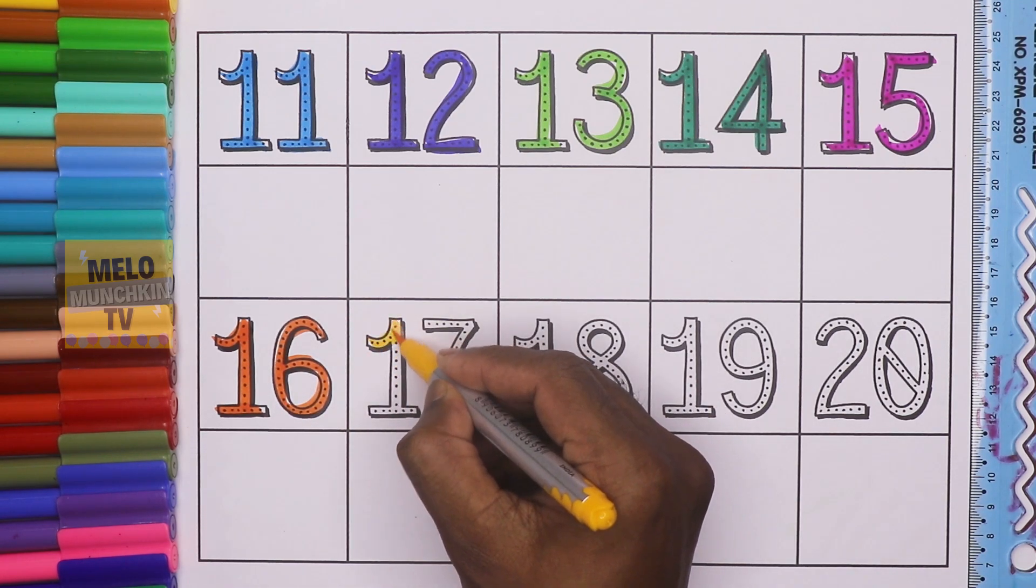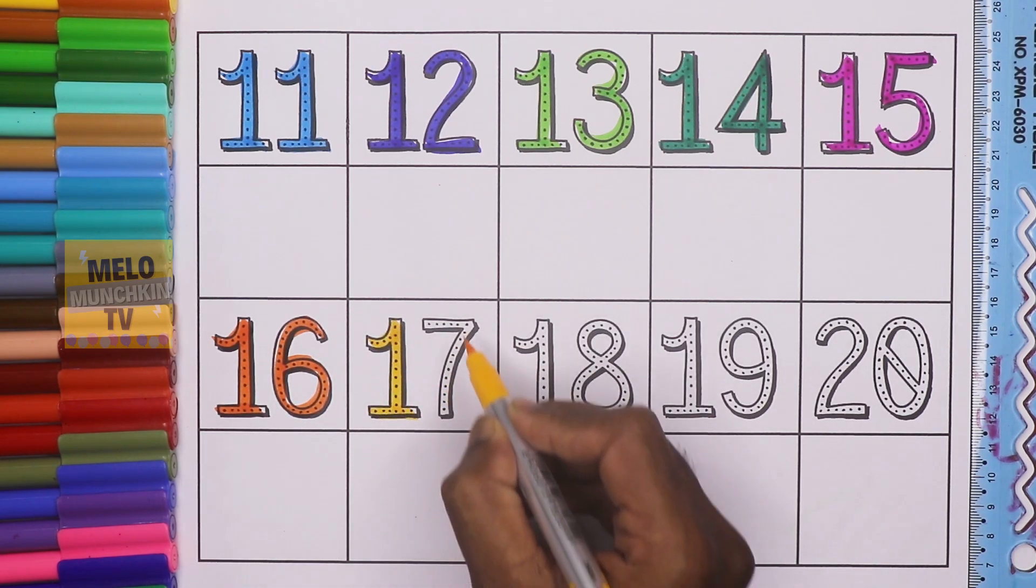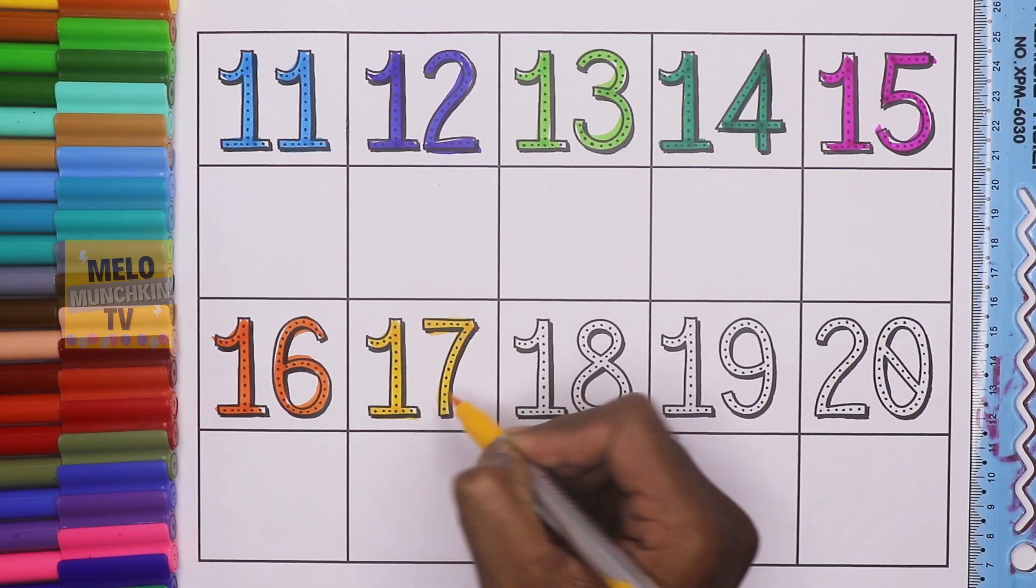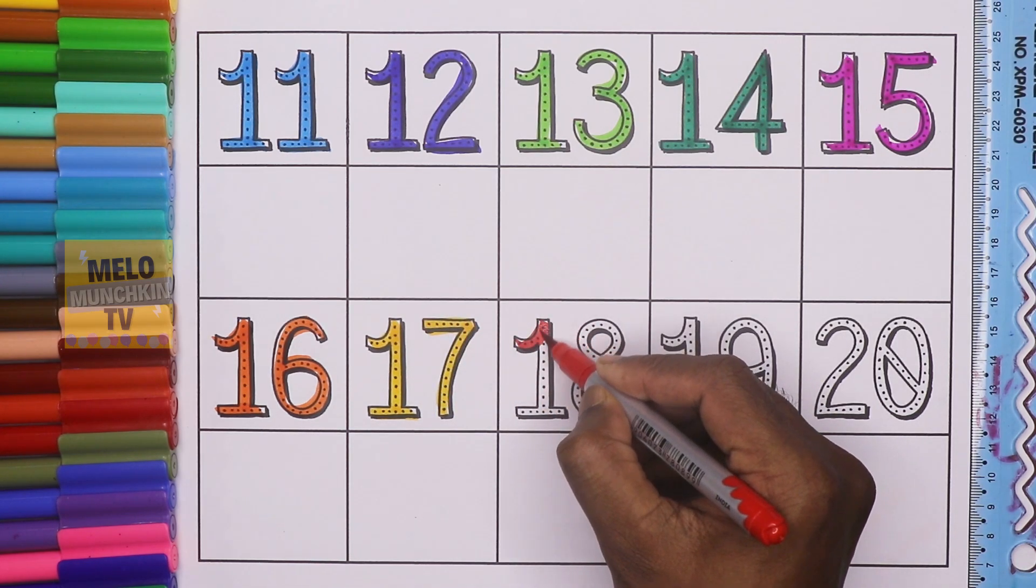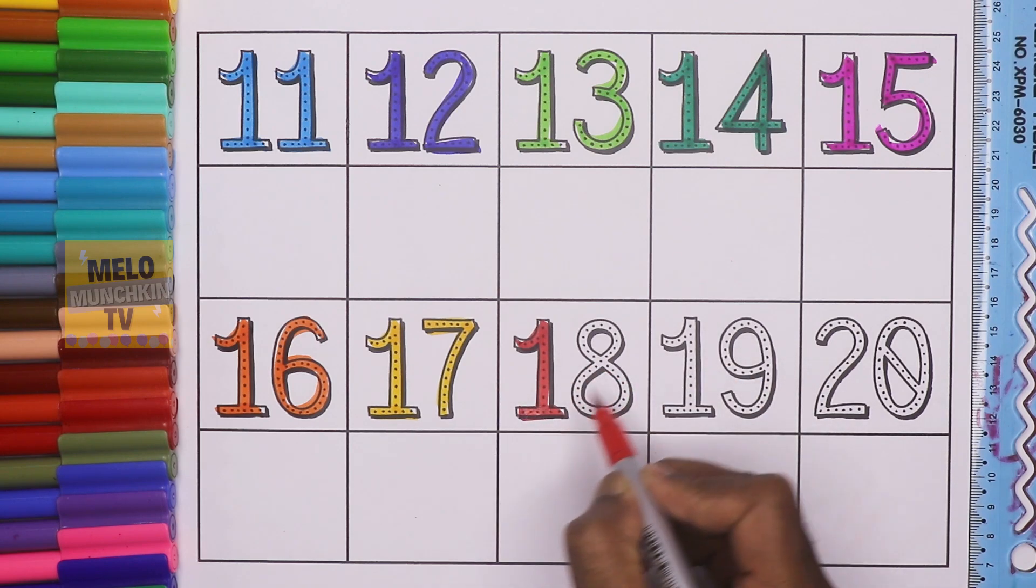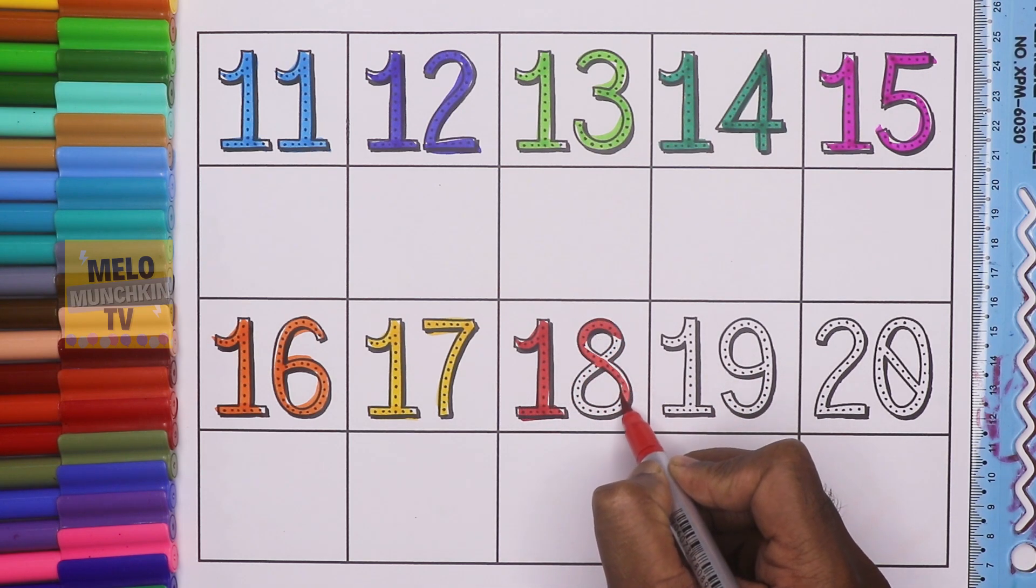This is 17. 1, 7, 17. This is 18. 1, 8, 18.